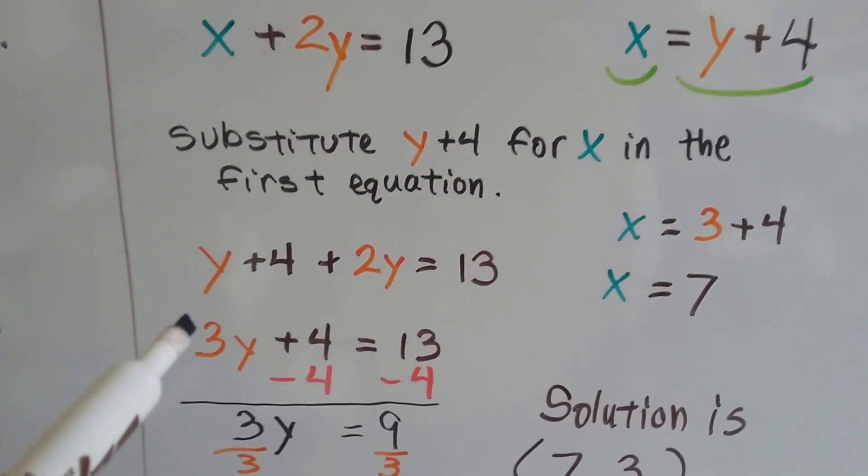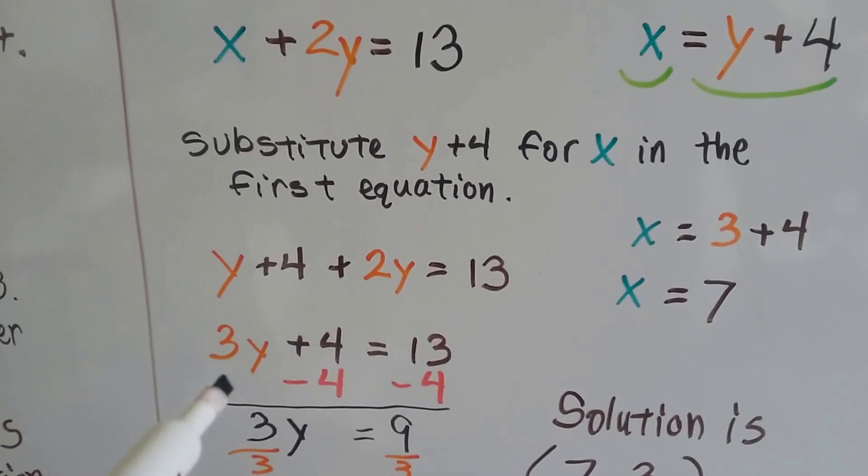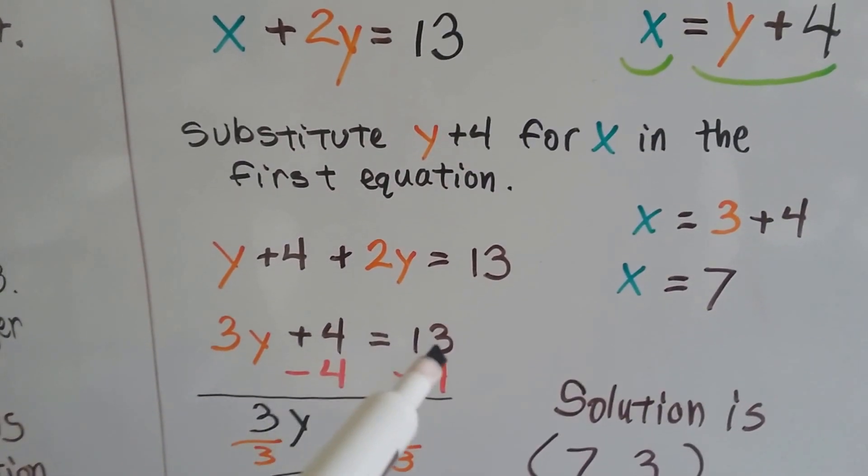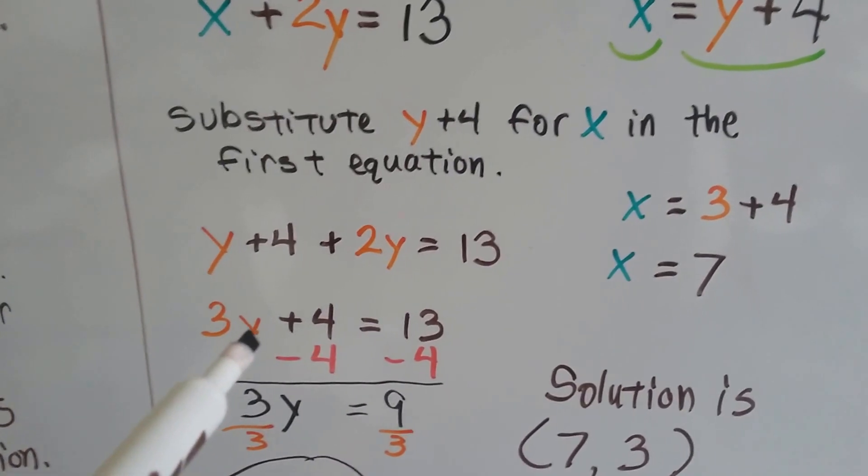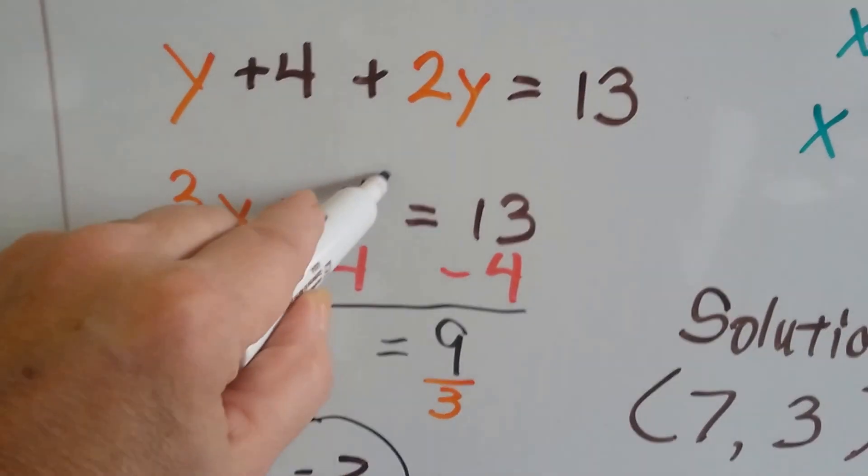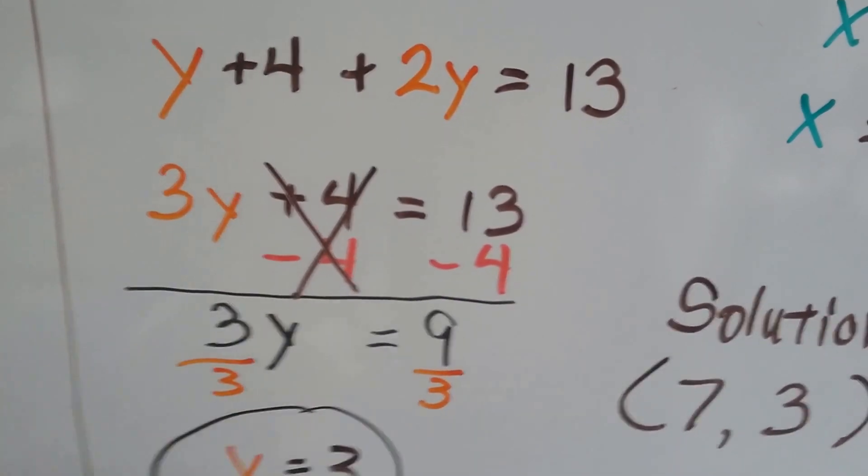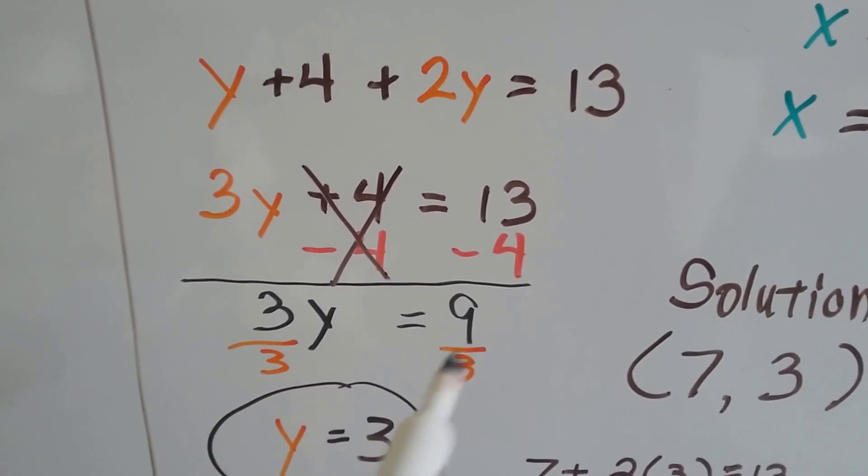So now we've got y plus 4 plus 2y equals 13. We can combine like terms. So we've got 3y plus 4. 3y plus 4 equals 13. Now to isolate the y to one side, the first thing we need to do is use additive inverses to create a zero pair and we eliminate this and we get 13 minus 4 is 9. So we have 3y equals 9.